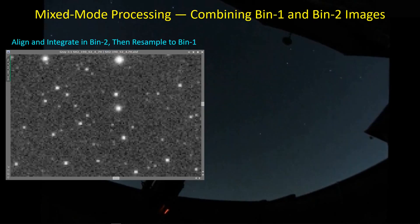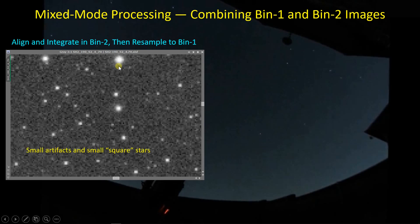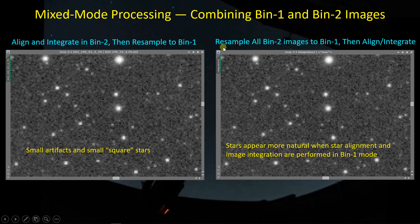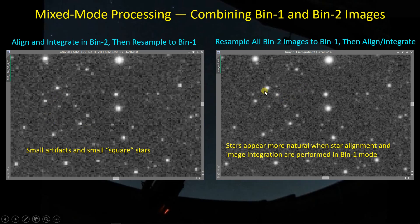And then there's the mixed mode processing that I'll be doing with my Red Cat 51 and GT81. What you're looking at here is a highly zoomed in picture of the sulfur data from a target. I captured the data in BIN-2, aligned it in BIN-2, and integrated or stacked the BIN-2 data all in BIN-2 mode, and then resampled it up to BIN-1 mode. Small stars are quite boxy and the larger stars come out more pixelated. So I'm changing my approach — instead I resample all of the BIN-2 images up to the BIN-1 level and then align and integrate all of those images at the BIN-1 level. You can see that these boxy stars are now more rounded because the stacking operation has spread light into adjacent pixels.